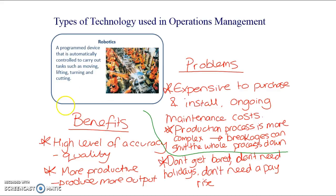Benefits of using robotics: they're very accurate, especially when making cars — they can cut and place parts very precisely to make almost identical products. They can produce more output, lift really heavy things, and they don't get bored, don't need holidays, don't need a pay rise. However, they're very expensive to purchase and install, especially for small businesses. The production process becomes more complex — you need technicians — and breakdowns can delay the whole business process, as problems with advanced technology tend to be quite serious.